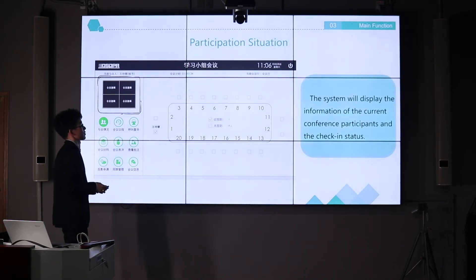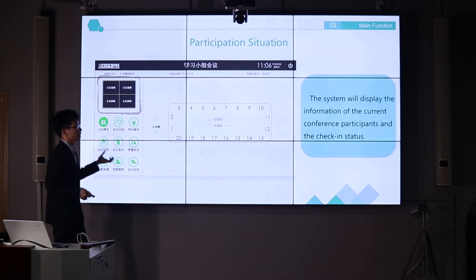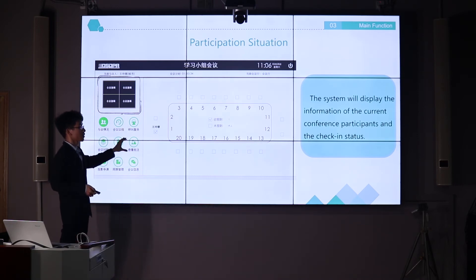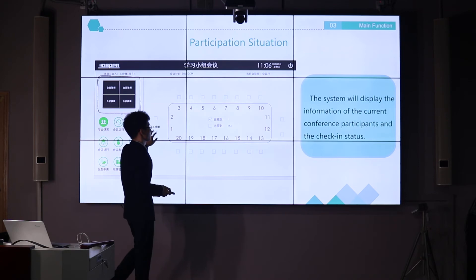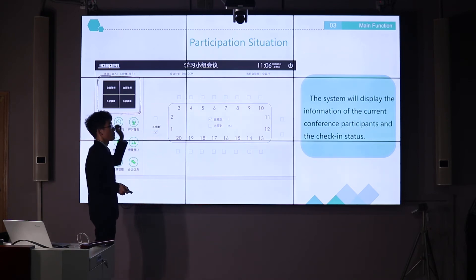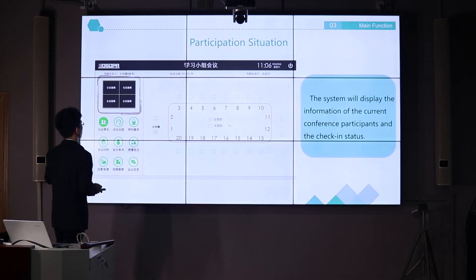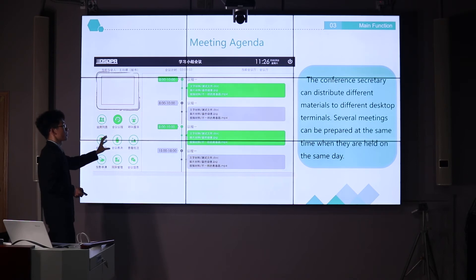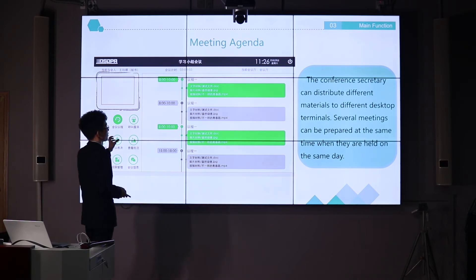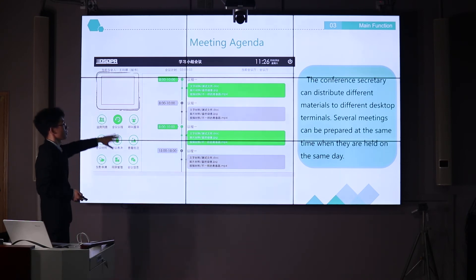Part 3 is the main functions of this system. The first function is the participation situation — every user will get a network account to log in when entering the meeting room. After logging in, the page will show who has participated in the conference and display the attendance status of all attendees. The second function is the meeting agenda, which can be uploaded and adjusted through the server via PC and will then be shown on all users' screens.